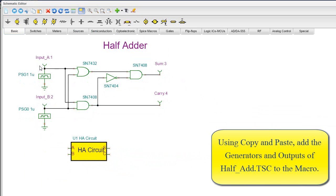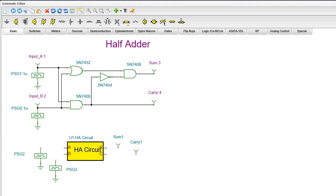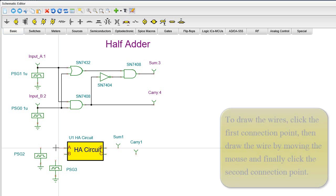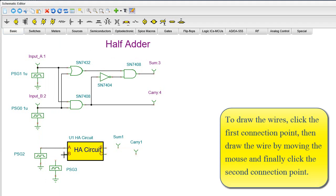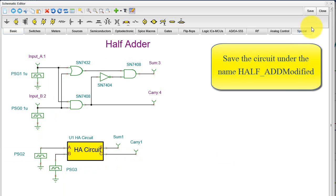Insert the newly created HACircuit macro. Using copy and paste, add the generators and outputs of HALF underscore ADD dot TSC to the macro. To draw the wires, click the first connection point. Then, draw the wire by moving the mouse and finally click the second connection point. Save the circuit under the name HALF underscore ADD MODIFIED.